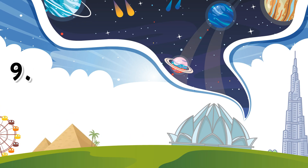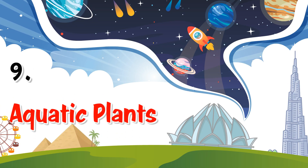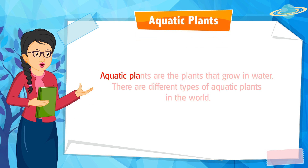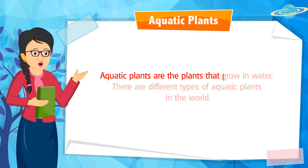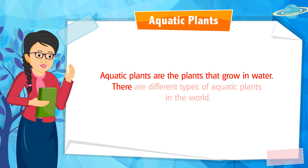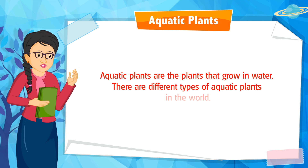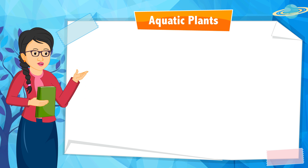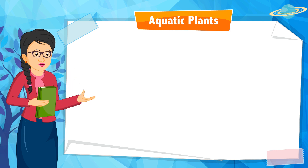Chapter 9: Aquatic Plants. Aquatic plants are the plants that grow in water. There are different types of aquatic plants in the world. Now we will talk about a few of them.